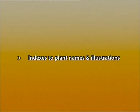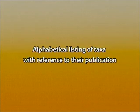Let us start with the first — indexes to the plant names and illustrations. What is an index? An index is an alphabetical listing of taxa. Taxa means any taxonomic group, with reference to their publication — when the description of a particular plant was first published in a particular publication, say a journal. This index provides references to the original publication of names, the scientific names, and placement of a particular plant in a classification scheme. These indexes form the basis of a taxonomic library and are essential for scientific identification, nomenclature, and classification.